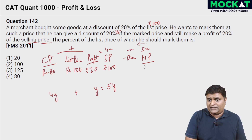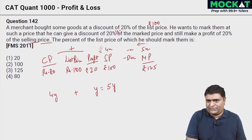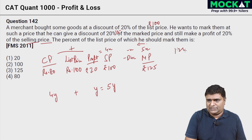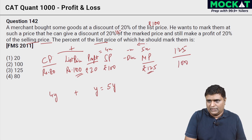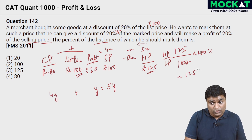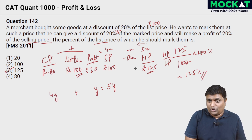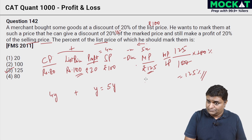SP is 100, which equals 4x, so 1x equals 25 and 5x equals 125 rupees. The question asks: mark price is what percentage of the list price? Mark price 125 divided by list price 100 into 100 percent equals 125 percent. So the answer is option 3. It's a very good question with a lot of play on words — good practice.